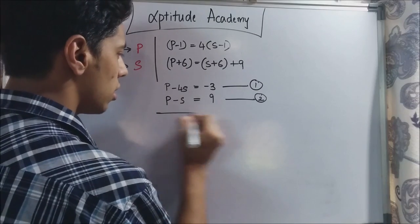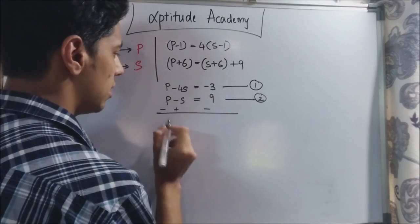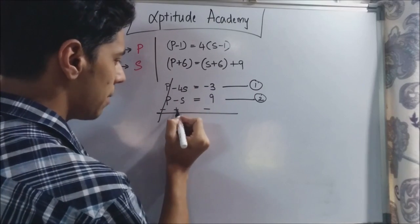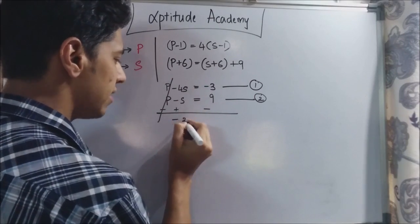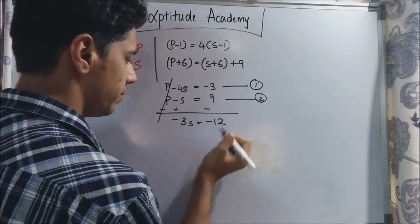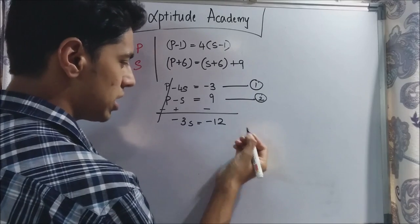So now you got minus plus minus. P minus P cancels out. Minus 4S plus S. So it will be minus 3S. Minus 3 minus 9, minus 12. So minus 3S is equal to minus 12.